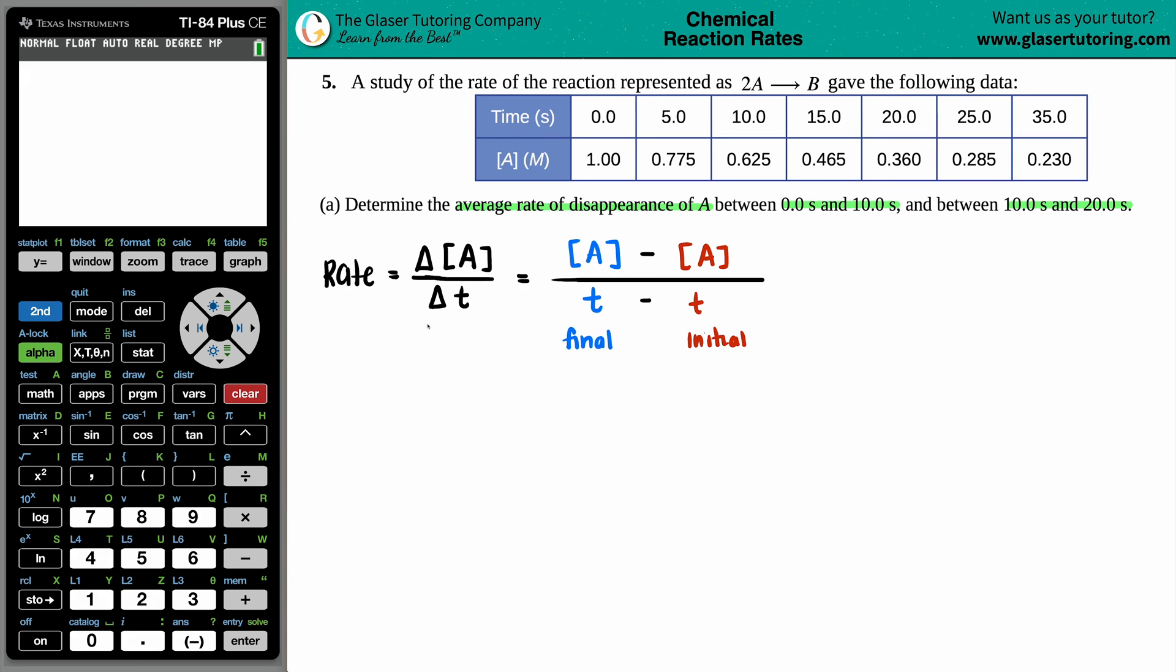That will get you the general rate. Now we need to find the rate of disappearance - disappearance just means that when we plug it into the calculator, we'll probably see a negative value. We have two separate times: 0 and 10, and 10 and 20. So we have two problems. Let's find the rate from 0.0 seconds to 10.0 seconds.